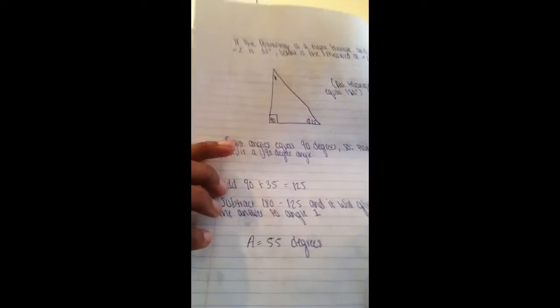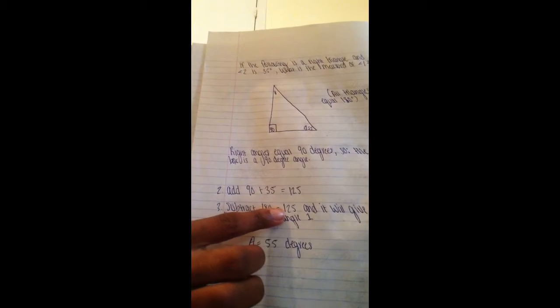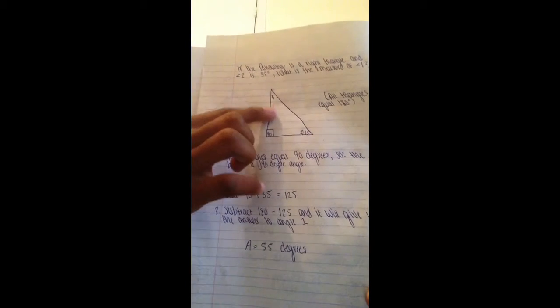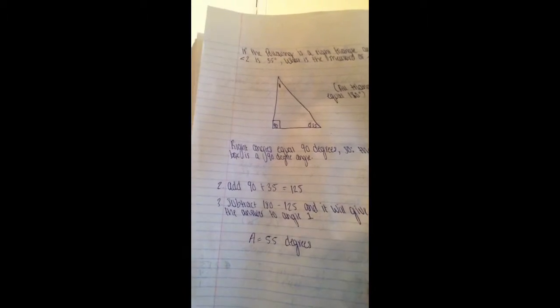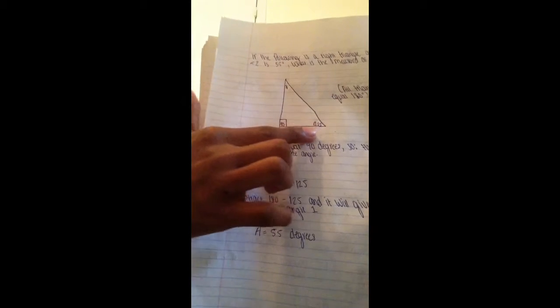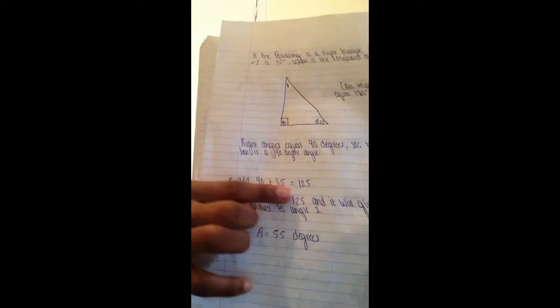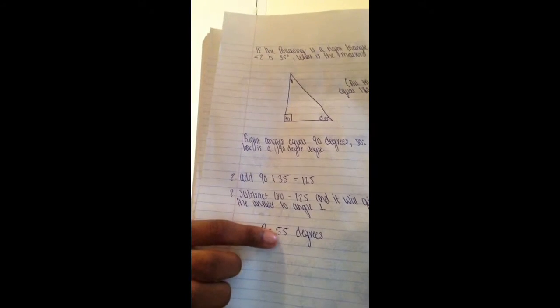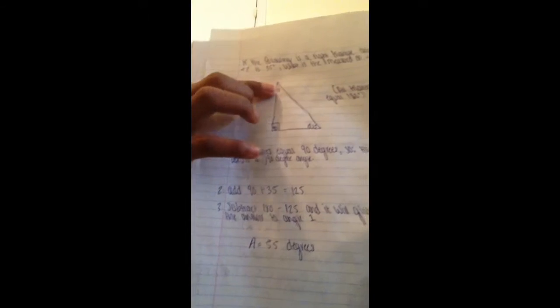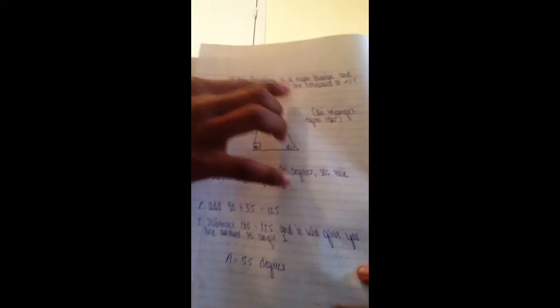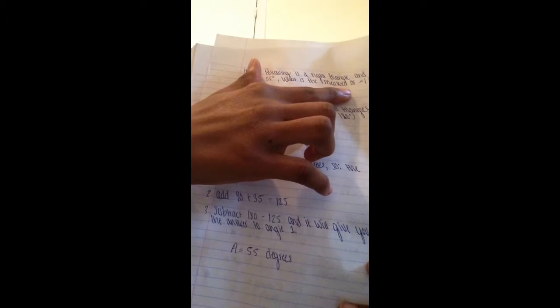And the answer is 55 degrees. Why do you subtract 180 from 125? 180, the triangle, all of the triangle equals up to 180. So, since you already got 125 right here, you have to see the difference to get angle 1. So, 180 take away 125 is 55. So that means angle 1 is 55 degrees. See, I asked what is the measurement to angle 1. That's all you have to do for that problem.